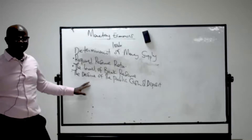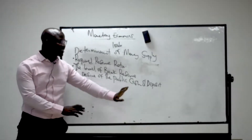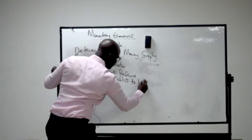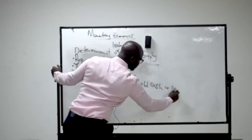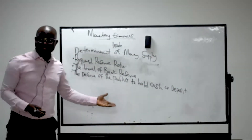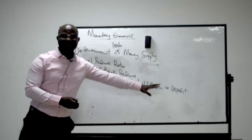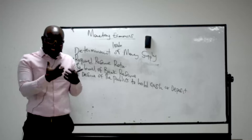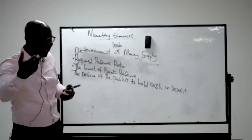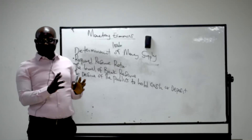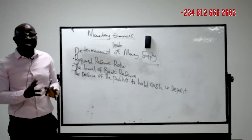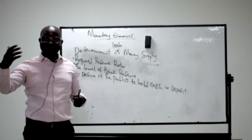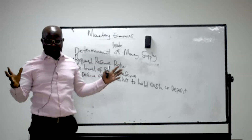Another determinant under money supply is the desire of the public to hold cash or deposit. If the public prefers to hold cash rather than saving in the bank, there is believed to be less money circulating in the economy. However, if the motive of citizens is to deposit or save with financial institutions, this creates more money supply in the economy for investment.